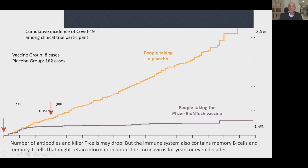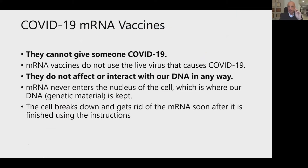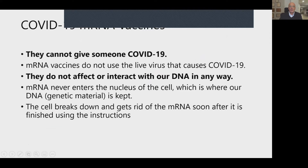Last week they decided to unblind the study, so I was formally told I had received the vaccine. I agreed to participate in the study, so over the next 18 months they will monitor my T cells and B cells. A couple of points to emphasize for the anti-vaxxers: COVID-19 mRNA vaccines cannot give someone COVID-19. They do not use a live virus to stimulate the immune response. They do not affect or interact with our DNA, and never enter the nucleus of the cell. The cells break down and get rid of the mRNA soon after finishing using the instructions.